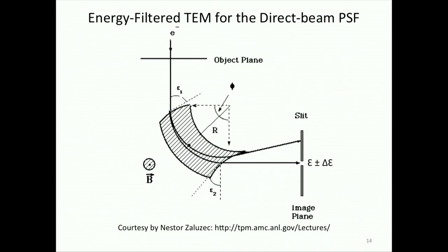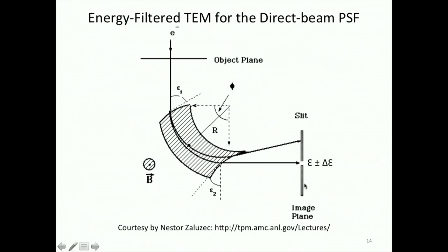To measure the direct beam PSF, I'm going to use an energy filter TEM. In this technique, you have a sample on top and after the electron passes through the sample and loses energy, it enters a spectrometer with a magnetic field that bends the electron depending on its energy. So depending on the energy loss, the electron undergoes a different radius of curvature. You can add a slit to select the specific energy loss you want to study, and then after the slit you put a CCD to image what the spot size looks like after a given energy loss.